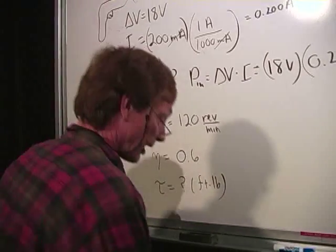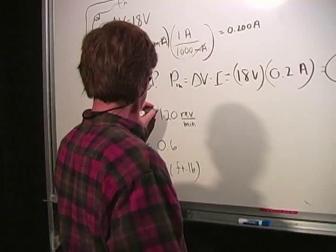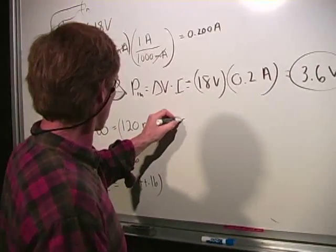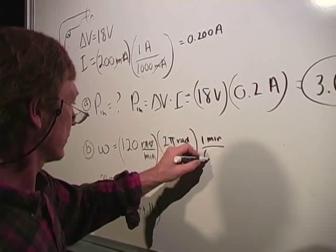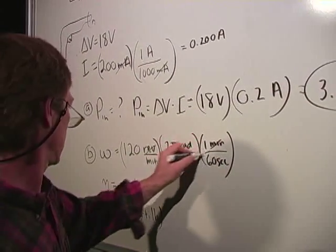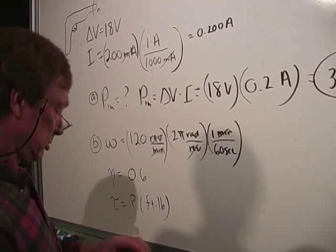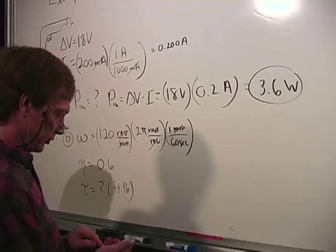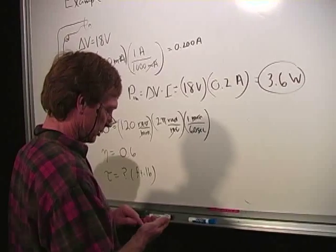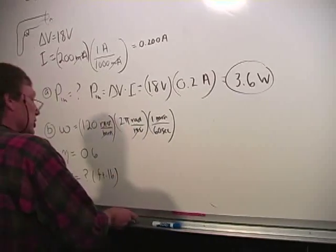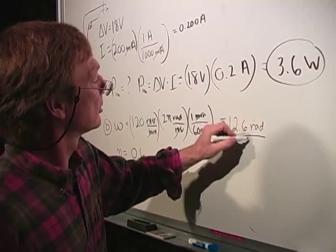So the first thing we'll have to do is get this angular velocity in radians per second. So that's 2 pi radians per revolution. There's one minute for every 60 seconds. So 120 times 2 times pi divided by 60 equals 12.6. So we've got 12.6 radians per second.